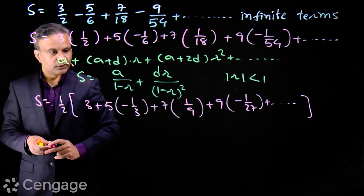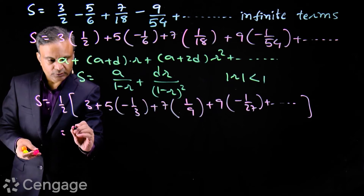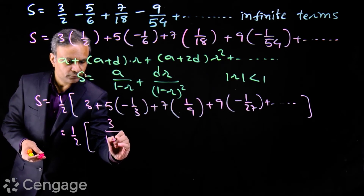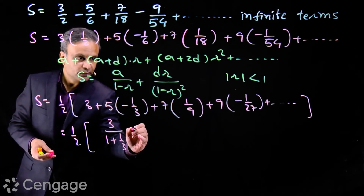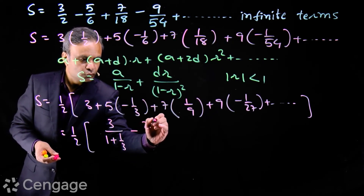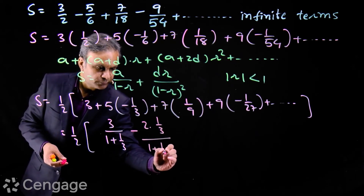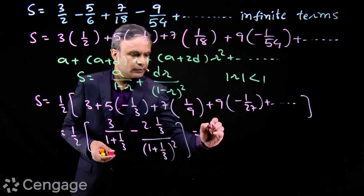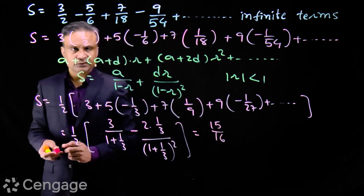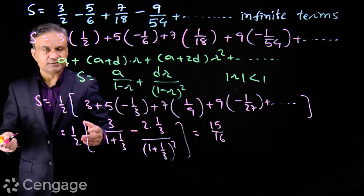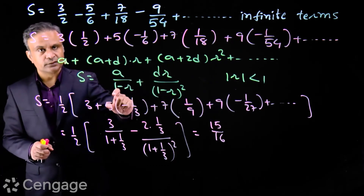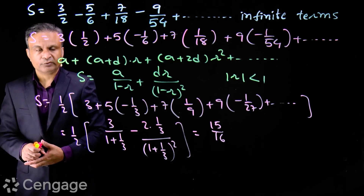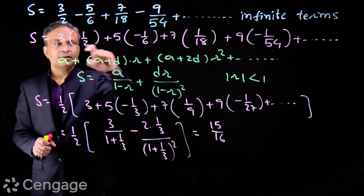Now this AGP is in the standard form where a = 3, d = 2, and r = -1/3. Substituting into the formula: 3/(1-(-1/3)) minus 2(-1/3)/(1+1/3)². Simplifying this gives the sum inside the brackets, and multiplying by (1/2) gives 15/16 — the same answer we obtained using the subtraction method. Remember, the formula applies only when the AGP is in the standard form, so we needed to factor out 1/2 first.